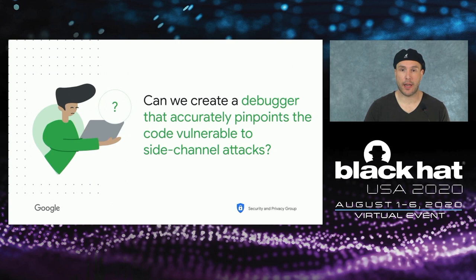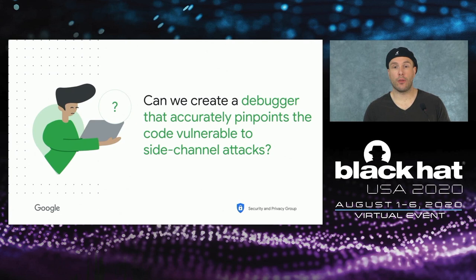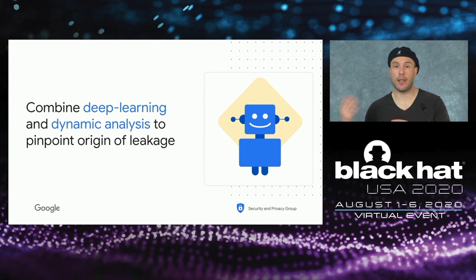This is why we asked: is there a way to create a debugger that will help us pinpoint accurately and quickly what part of the code is interacting with the hardware in a way that makes it vulnerable to side-channel attacks? The answer is yes — we believe that by combining deep learning and dynamic analysis, we'll be able to quickly and efficiently find the origin of the leakage, where the implementation is giving information that can be used to extract the key.